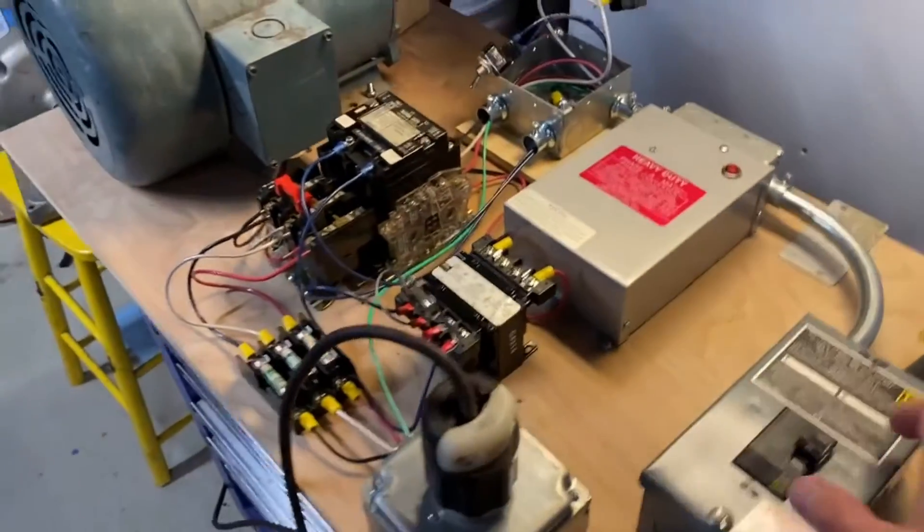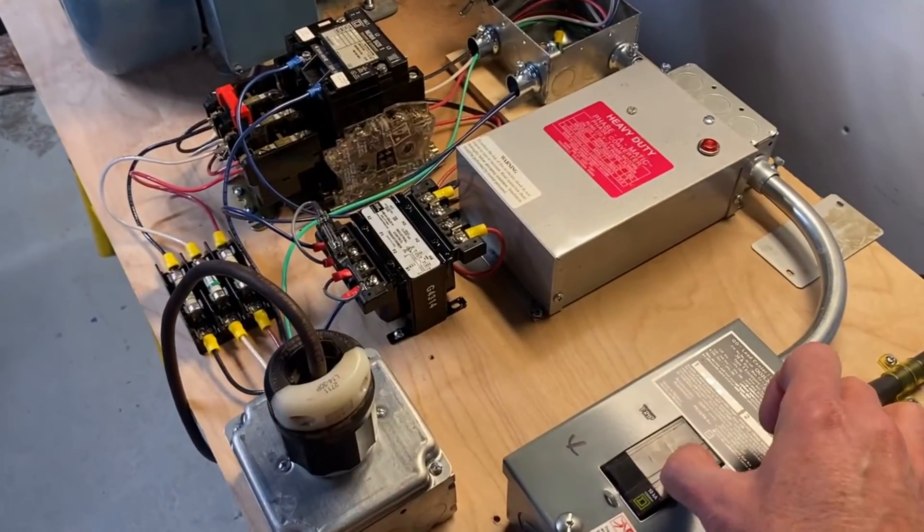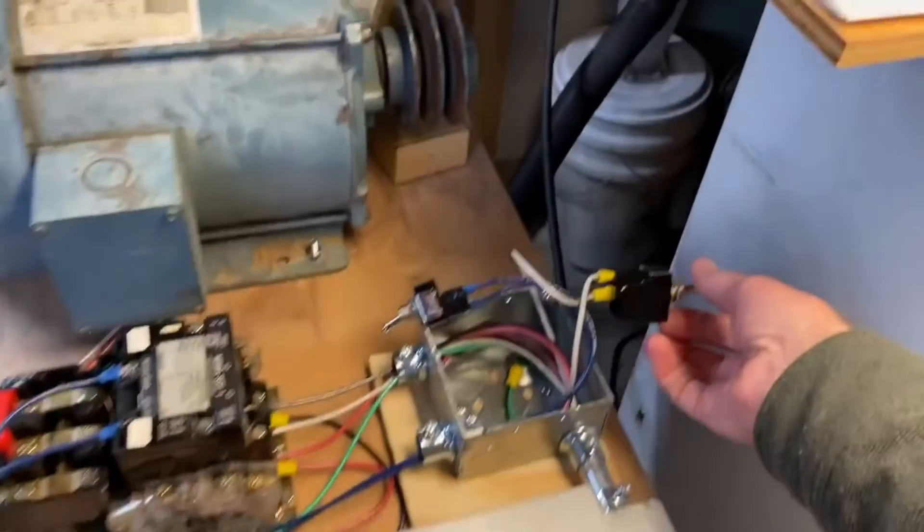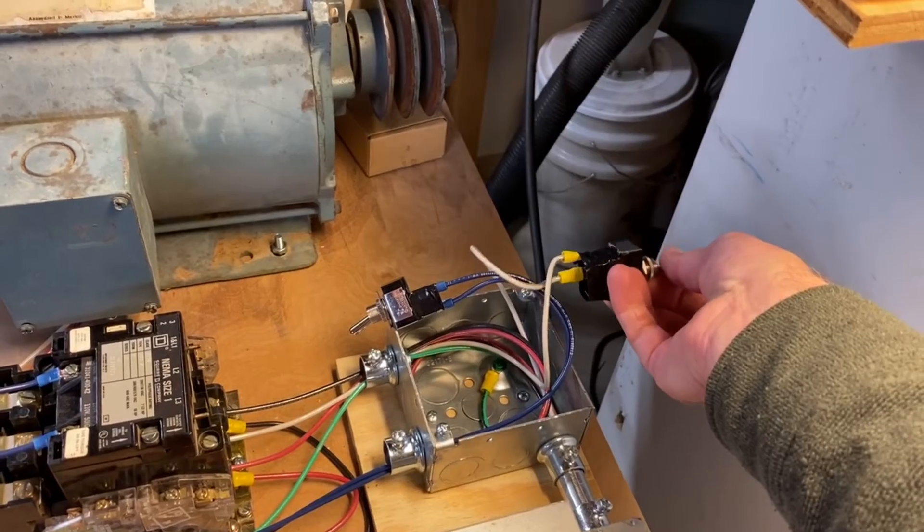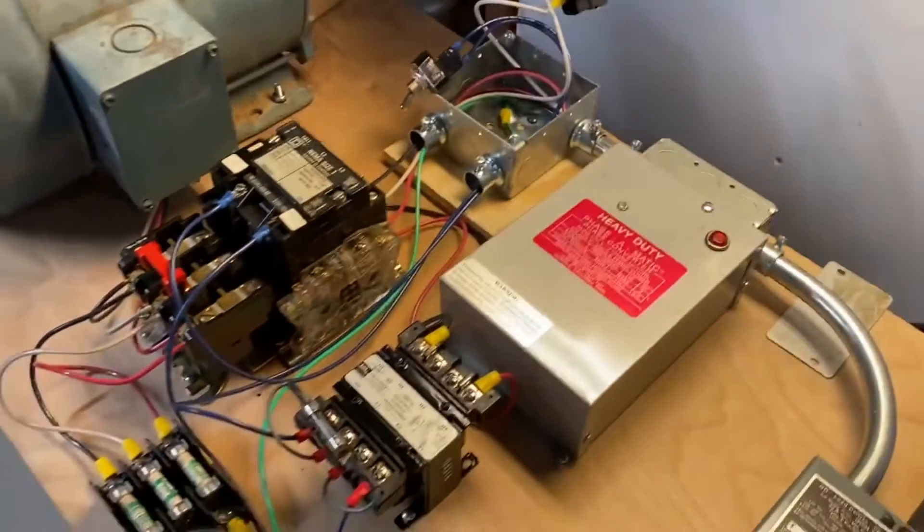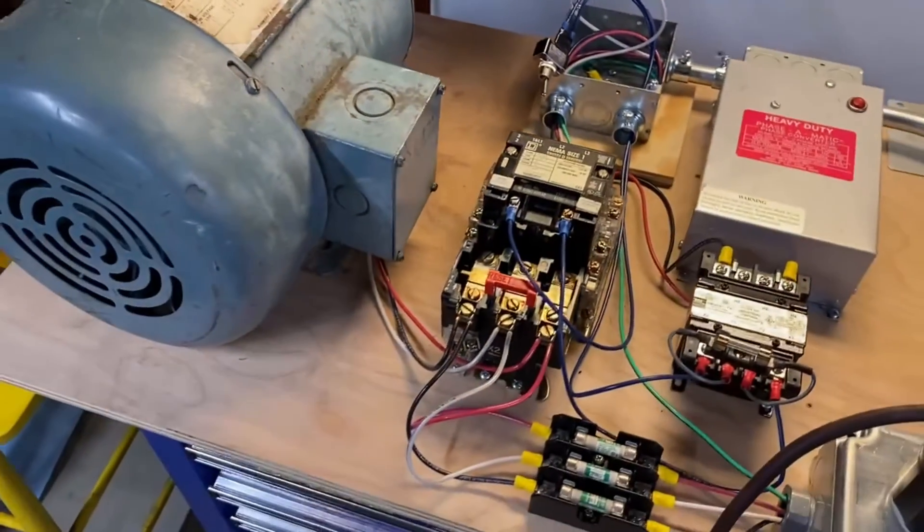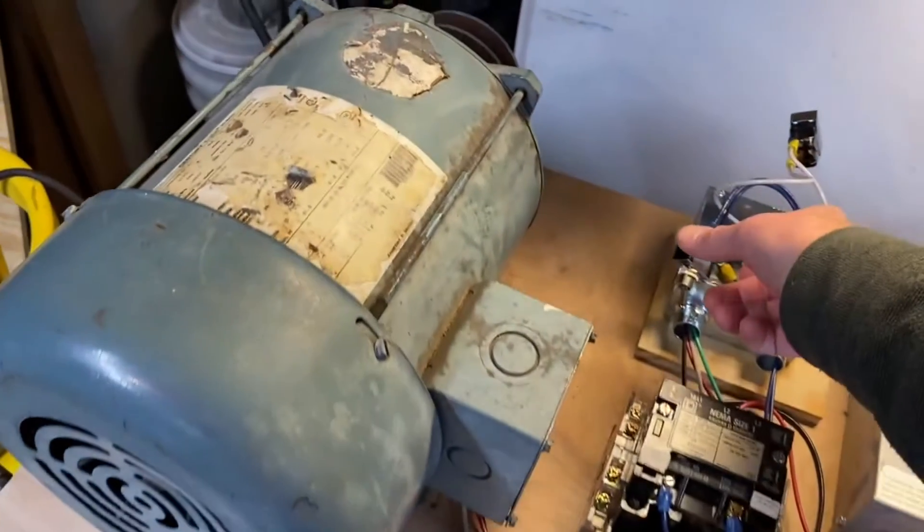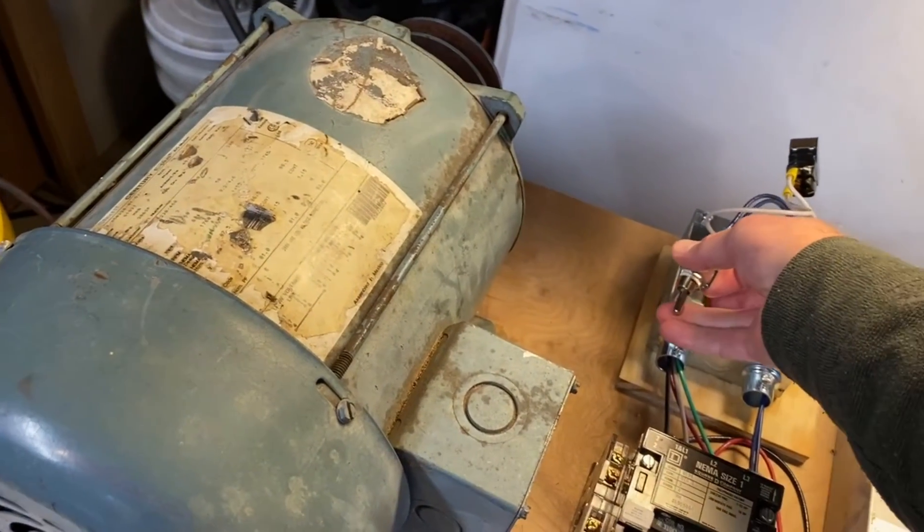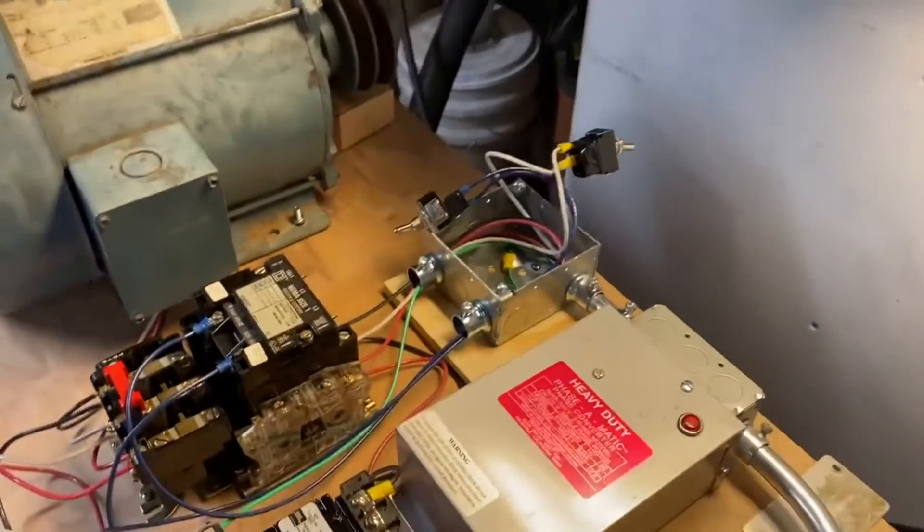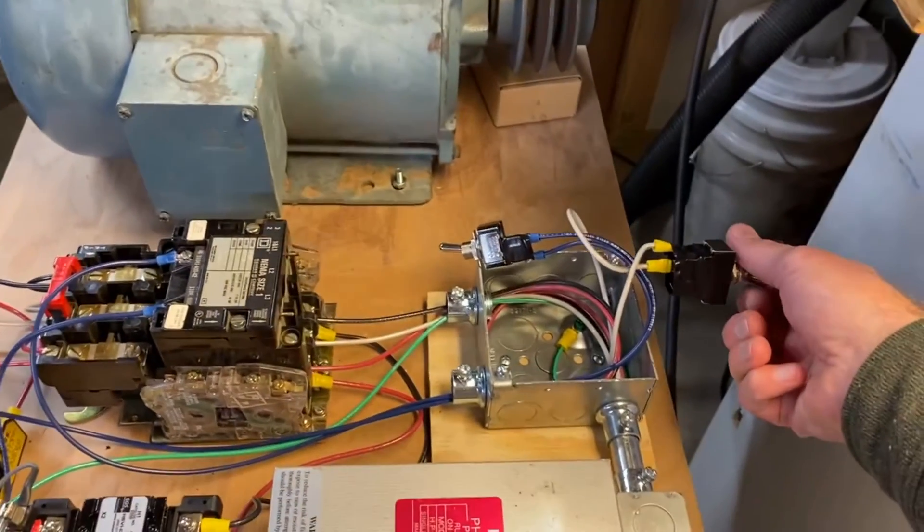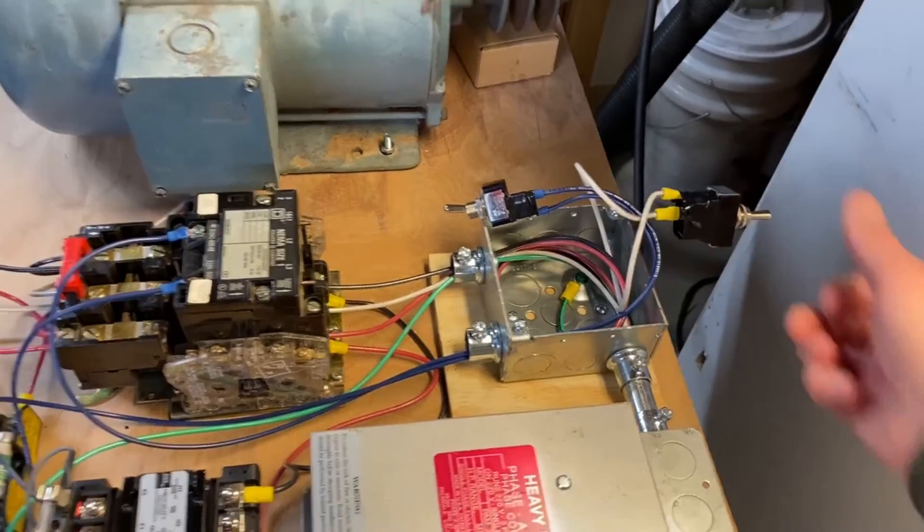All right. Let's do it. So, main power here. I'll engage the generated phase here, trying very carefully not to touch any exposed wires. Now, the next one will be the big clunk and the idler motor starting. So, let's do that with this switch. Then, as the instructions for the phasematic say, I'm going to disconnect the generated phase.